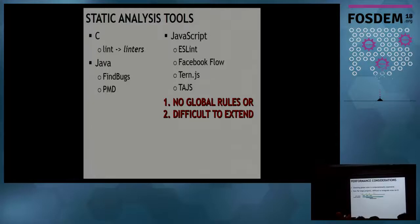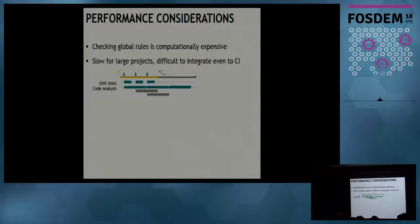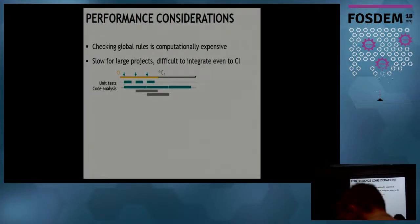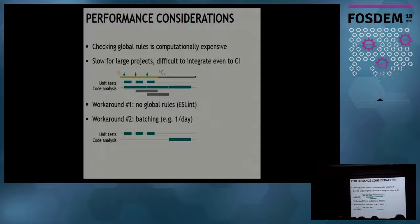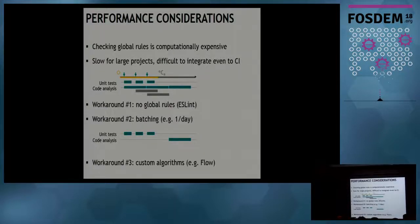Checking global rules is a computationally very expensive operation in large source code repositories — sometimes so slow it's even difficult to integrate into CI workloads. Workarounds include: just avoiding global rules and using file-level static analysis like ESLint does; batching your CI analytics to run a single analysis per day; or using smart custom algorithms that are fast but very difficult to extend with new rules.